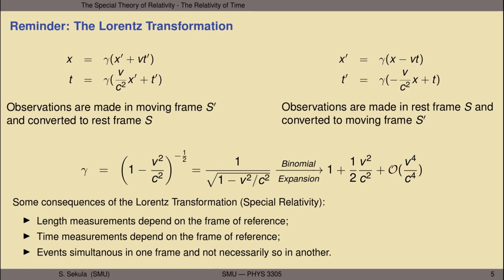We've looked at some consequences of the Lorentz transformation in special relativity. We've looked at length measurements and time measurements and seen how they depend on frame of reference. We've also looked at the simultaneity of events in one frame and seen that they are not necessarily simultaneous in any other frame that's moving with respect to the one in which they are simultaneous.